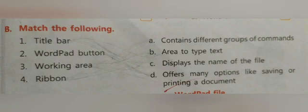Number three, Working area, you will match it with number B of the right hand side, that is area to type text. Number four, Ribbon, you will match with option A, contains different groups of commands.